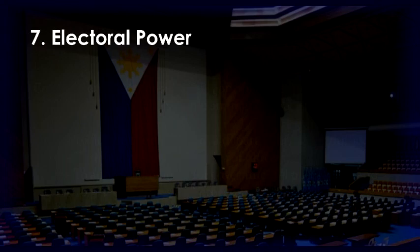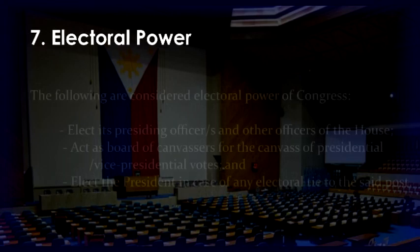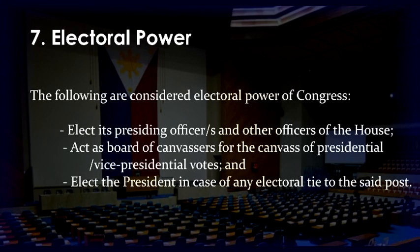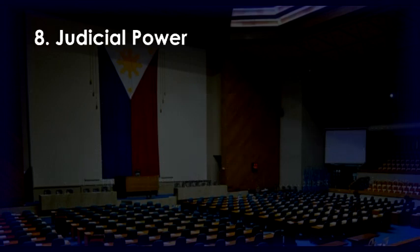Electoral power: Congress has the power to elect its presiding officers and other officers of the house, act as board of canvassers for the canvass of presidential and vice-presidential votes, and elect the president in case of any electoral tie to the said post.